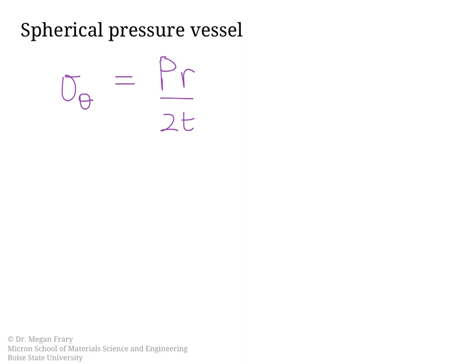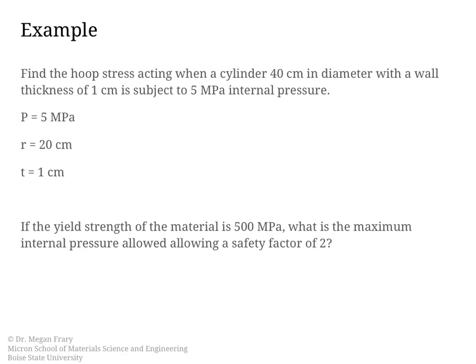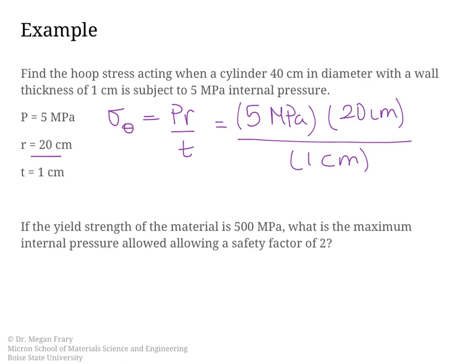Let's just quickly consider an example. Find the hoop stress acting when a cylinder 40 centimeters in diameter with a wall thickness of 1 centimeter is subject to 5 MPa internal pressure. So we have a radius of 20, and this is a cylinder, so the hoop stress will be given by PR over T. This is equal to 5 MPa times 20 centimeters divided by 1 centimeter. For an internal pressure of 5 MPa, we have this hoop stress of 100 MPa. It's worth noting that it really is significantly increased as compared to the internal pressure due to the geometry.